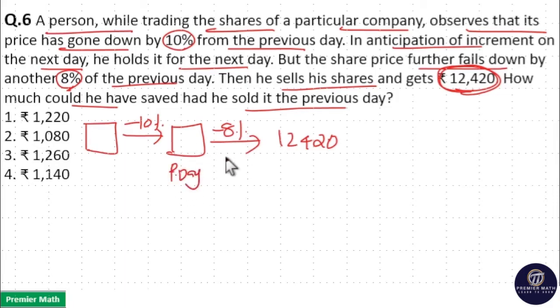So, previous day share value is equal to 100%. 100% minus 8% is equal to $12,420 means 92% is equal to $12,420. Now, if he sold it in previous day, he would have saved 8%. So, this is savings.